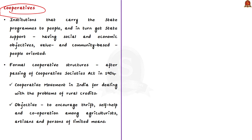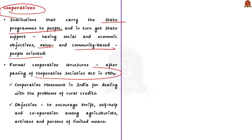To fully understand cooperative banks, we first need to understand cooperative societies. Cooperative societies are institutions which carry state programs to people, so they get state support. They have both social and economic objectives — they are value-based, community-based, and people-oriented. These cooperative societies came into formal existence after the passing of the Cooperative Societies Act 1904, which initiated a formal cooperative movement in India.